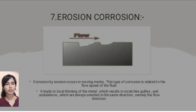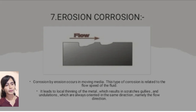Erosion corrosion. Corrosion by erosion occurs in moving media. This type of corrosion is related to the flow speed of the fluid. It leads to local thinning of metal, resulting in streaks, gullies, and undulations which are always oriented in the same direction — namely the flow direction.